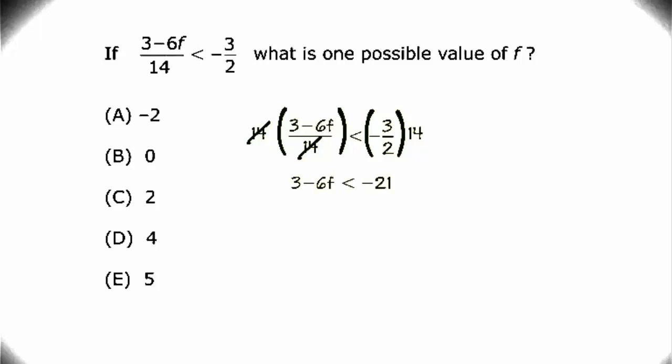Now, to isolate our f, we need to subtract 3 from both sides. And our result is negative 6f is less than negative 21 minus 3, which is negative 24.